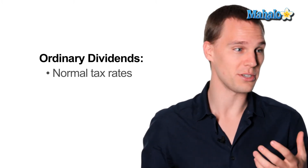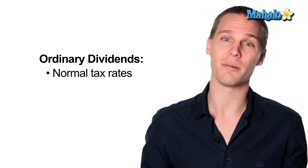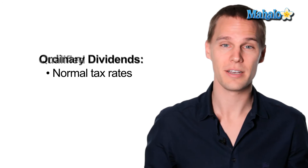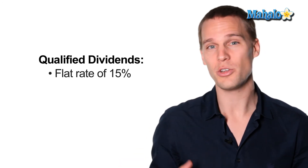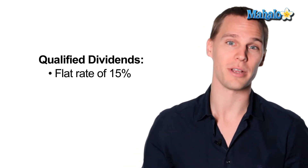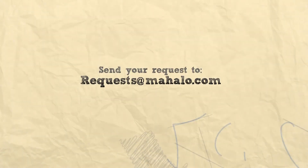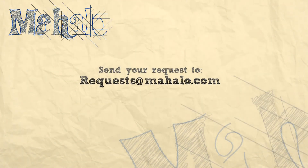Ordinary dividends are treated as ordinary income and the normal tax rates apply. Qualified dividends are usually taxed at a flat 15 percent rate. Thanks for watching — for other tax-related videos feel free to follow the link below or any of the links above, and be sure to rate, comment, and subscribe to our channel. If you have any requests or suggestions, send us an email to requests@mahalo.com. Thanks!